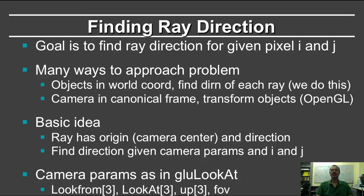A ray, as you know, has an origin, which is the camera center, and the direction. The goal is really to find what this direction should be, given the camera parameters and the pixel locations i and j. The camera parameters are as in GLU look at, so they are the look from, which is the camera location, the look at, which is where is the camera looking at, the up direction, and the field of view.